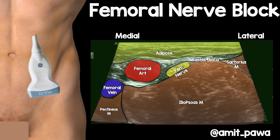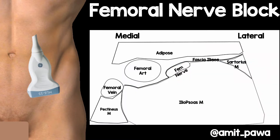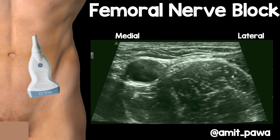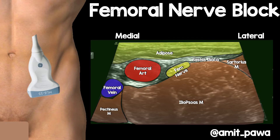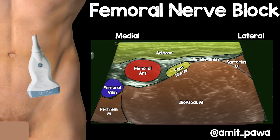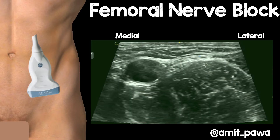If you were to place a probe over the region in the groin looking at the femoral nerve, this is the type of image you might see. We've got a single femoral artery, the femoral vein, the iliopsoas muscle, and then you can see sartorius laterally in the picture, and the femoral nerve tightly adherent to the iliopsoas muscle. In fact, some would say sometimes it even invaginates the muscle at that point.